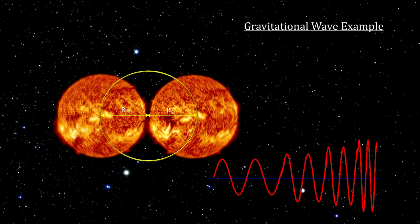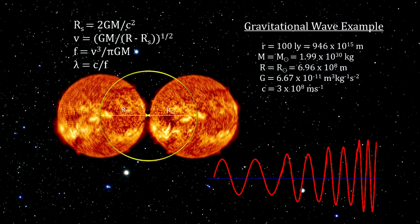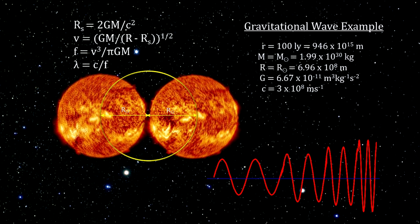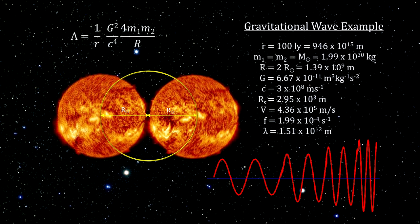To get an idea on the expected amplitudes and frequencies for gravitational waves created by a system like this one, let's put in some numbers. Suppose this system is 100 light years away and each star is the mass and size of our Sun. At the point where they are about to touch, we would see the maximum amplitude. In this example, we get 10 to the minus 21.